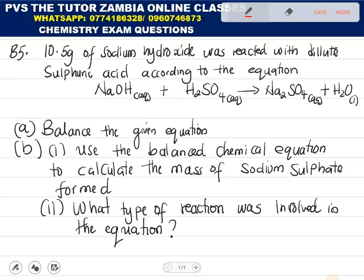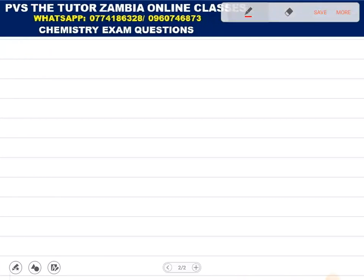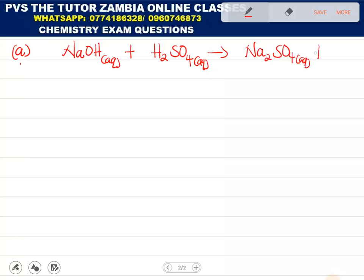First of all, how do we balance a chemical equation? You need to count the number of atoms on both the right side and on the left side of the equation. Let's rewrite the equation and balance it. So, part A, we have sodium hydroxide in aqueous, react with sulfuric acid, also in aqueous, giving us sodium sulfate plus water.